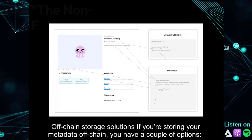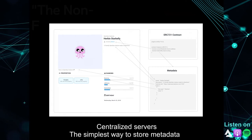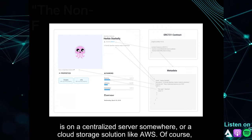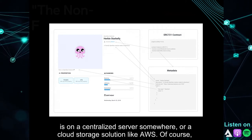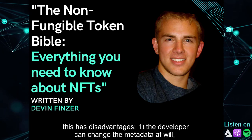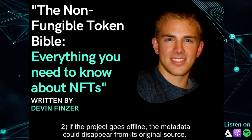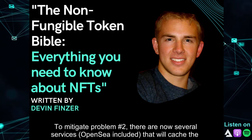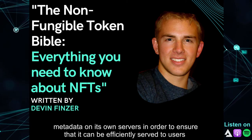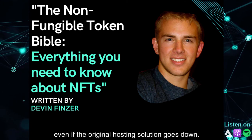For off-chain storage, there are a couple of options. The simplest is a centralized server or cloud storage solution like AWS, but this has disadvantages: the developer can change the metadata at will, and if the project goes offline, the metadata could disappear. To mitigate this, services like OpenSea cache the metadata on their own servers to ensure it can be efficiently served even if the original hosting goes down.